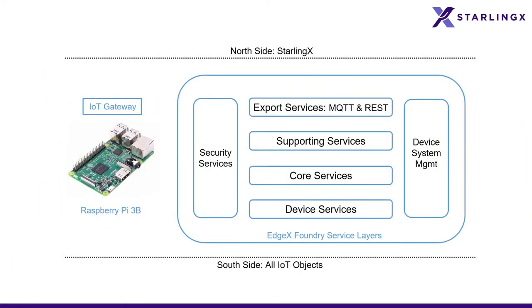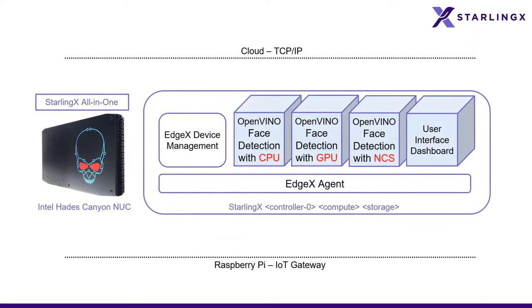The IoT gateway contains four EdgeX Foundry service layers: device, core, supporting, and export. With the export services, we can share status and control data of the devices through an MQTT message queue and REST protocol with a StarlingX worker node. In StarlingX, an integrated EdgeX agent collects data from the IoT gateway and shares them to the container applications.